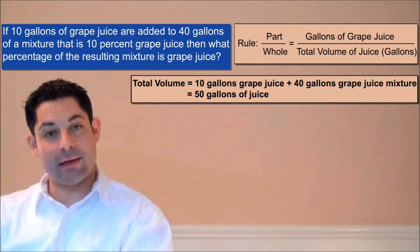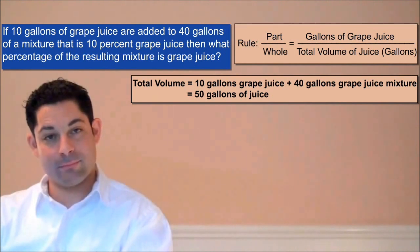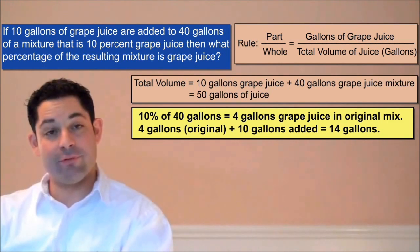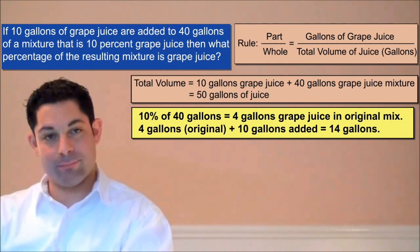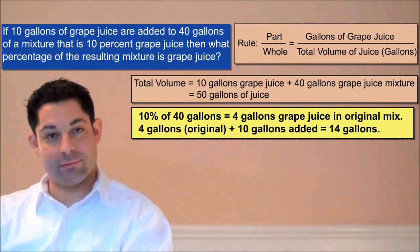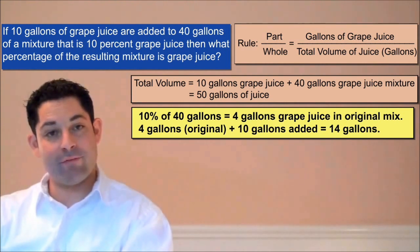The next step is to calculate how much grape juice we have. The second mixture is 10% grape juice, so it contributes 4 gallons of grape juice to the mixture. We also have another 10 gallons of grape juice being added to the mix. So in total we have 14 gallons of grape juice.